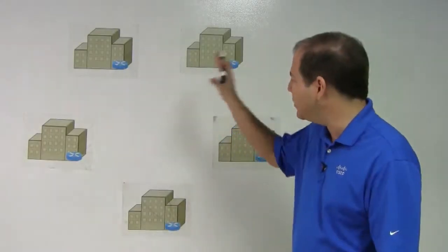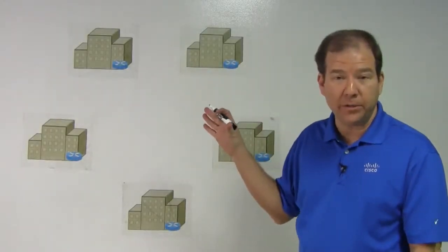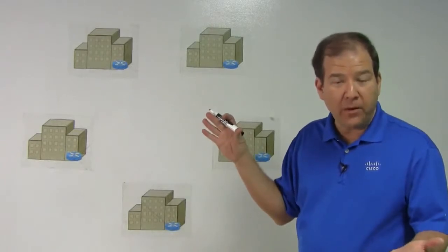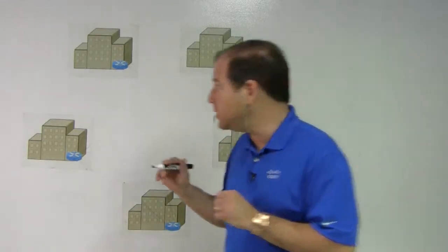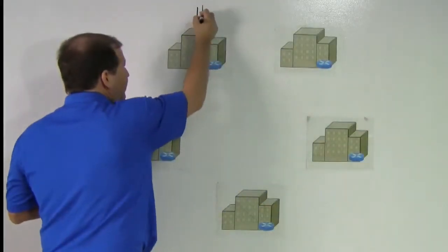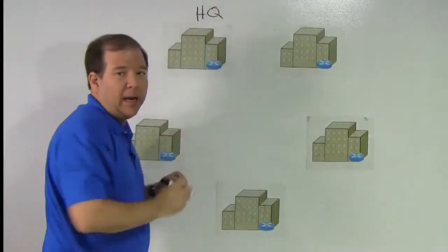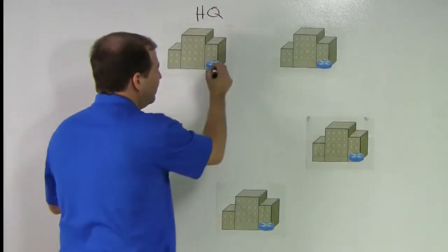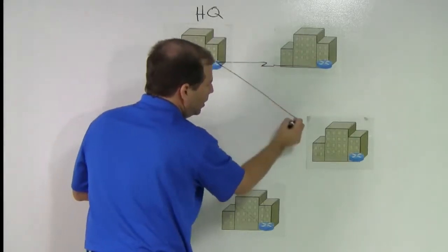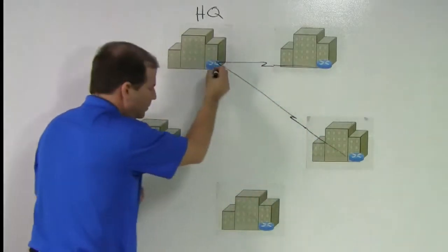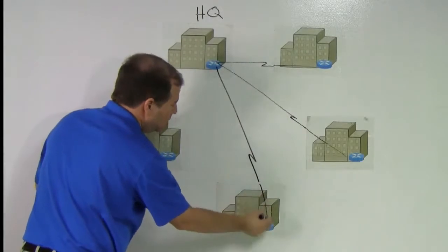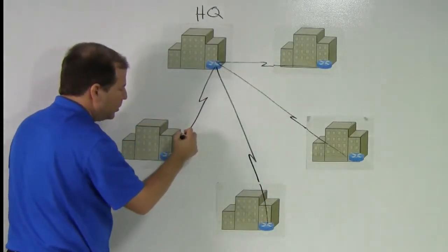Let's say we want to interconnect these five different WAN locations. One way of doing that would be having a hub and spoke topology. We could have the HQ site with a direct link to every other site. That's a hub and spoke topology.